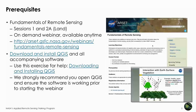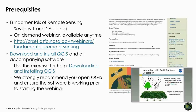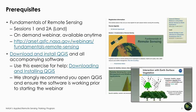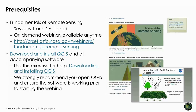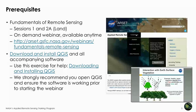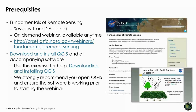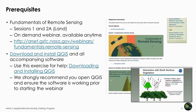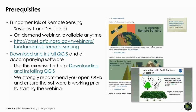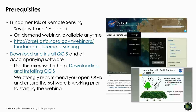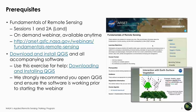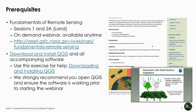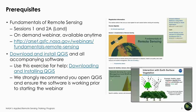There are several prerequisites for this advanced course. First, you must complete Fundamentals of Remote Sensing Sessions 1 and 2A, available as an on-demand webinar on our website. It is also very important to download and install QGIS and all accompanying software — we have an exercise called 'Downloading and Installing QGIS' to help with that. We also strongly recommend opening QGIS before attending to make sure the software is working properly.